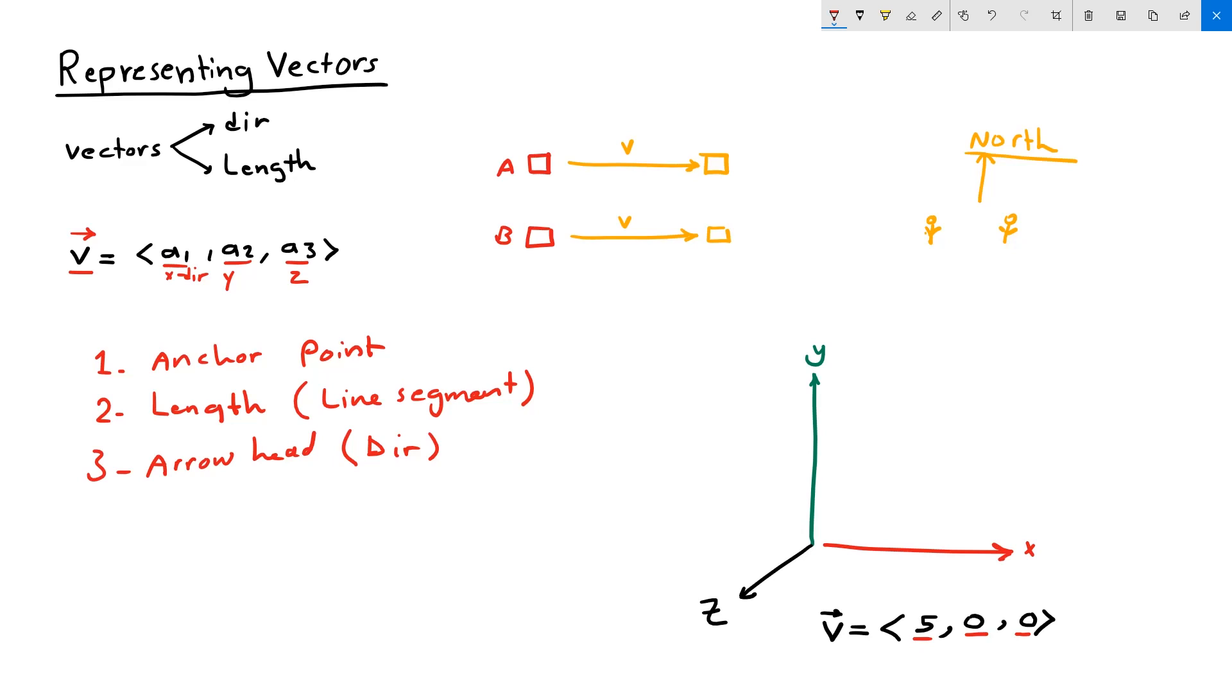So if my object is located at point A, and let's consider that my anchor point to my vector, then I can represent my vector as a line segment that is 5 units long, going in the positive x direction, and is anchored to the center of my object A. I was able to represent my vector v using a line segment and arrow that is anchored to that object.